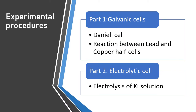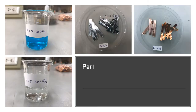Now let's look at the experimental procedures. This experiment is divided into two parts. Part one is the construction of galvanic cells, where you will construct two cells: the Daniel cell, and a cell connecting a lead half cell with a copper half cell. Part two is the construction of the electrolytic cell.